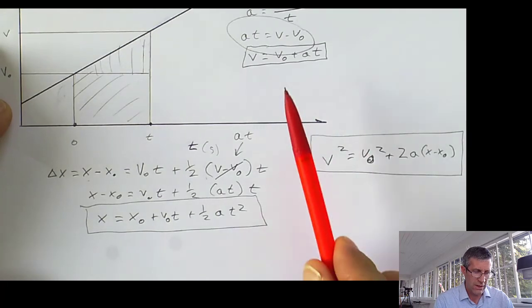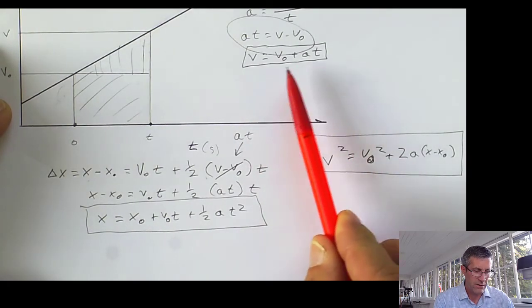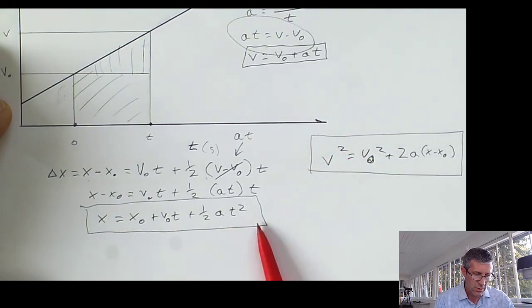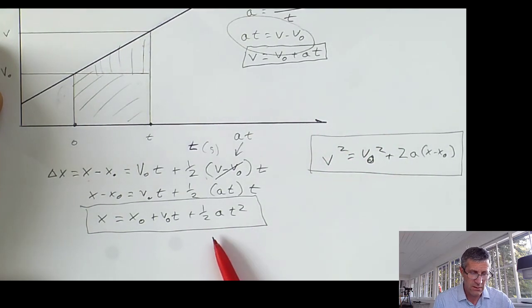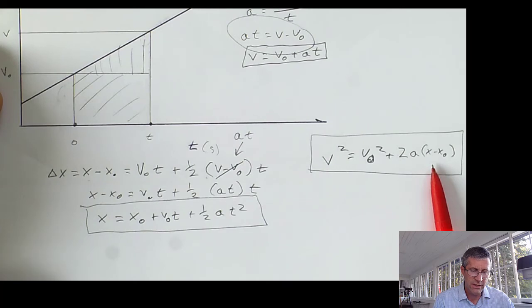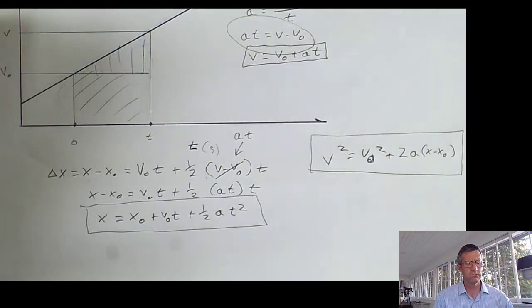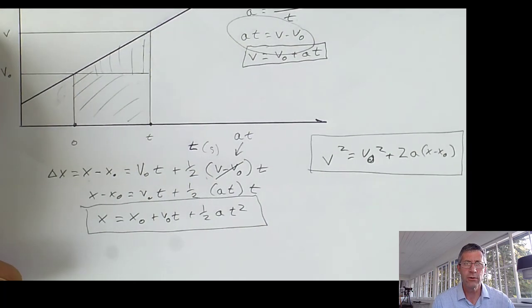But notice that this first equation, I don't have displacement. The second equation, I don't have final velocity. And the third equation, I don't have time. So what I do is I'll hunt around, find the equation that doesn't have the thing I don't care about, double negatives, and use that and run with it. Hope that helps. Bye.